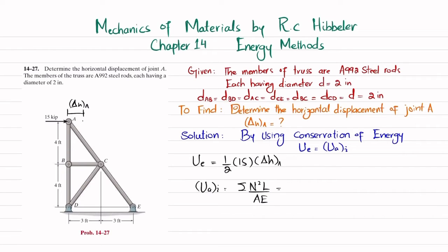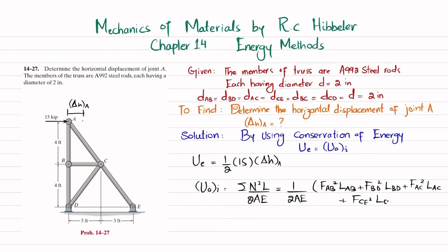We will find the forces in each member. Taking 1 over 2AE common, we are left with: F_AB squared times length AB, plus F_BD squared times length BD, plus F_AC squared times length AC, plus F_CE squared times length CE, plus F_BC squared times length BC, plus F_CD squared times length CD. We will find these six different forces using the method of joints.